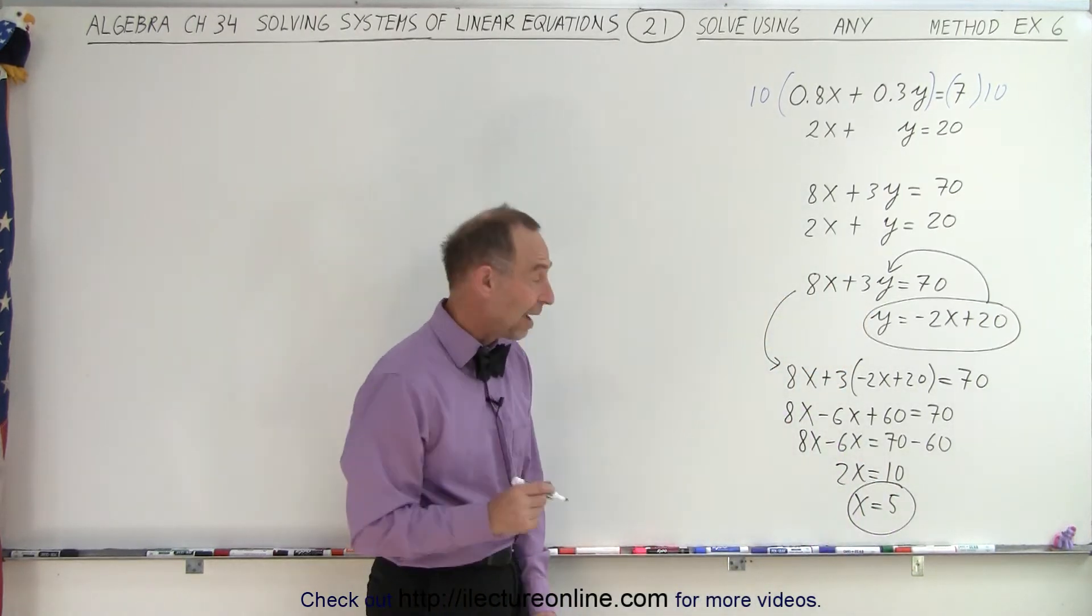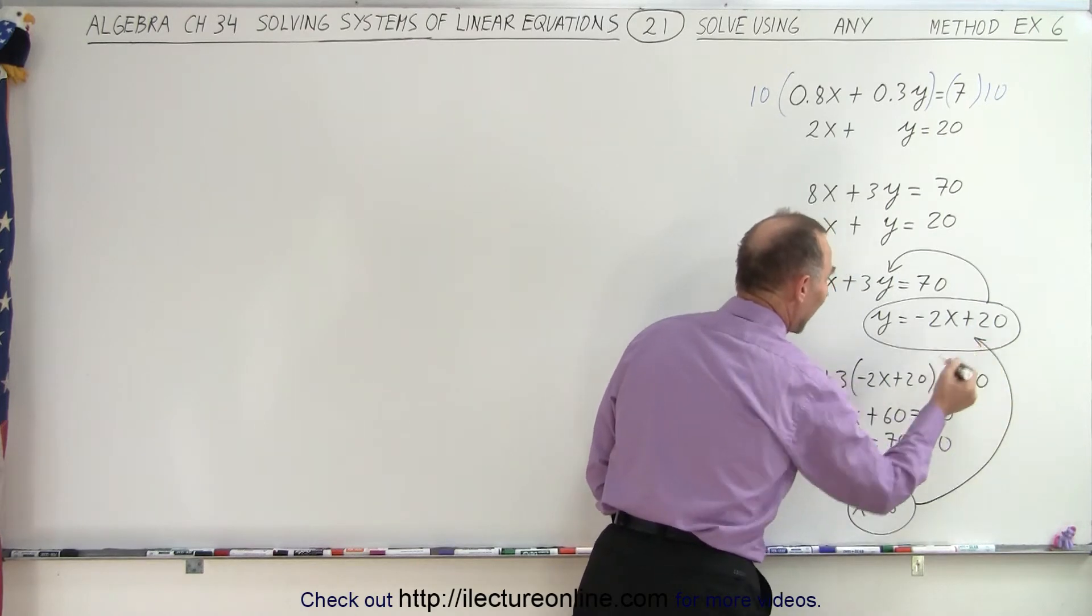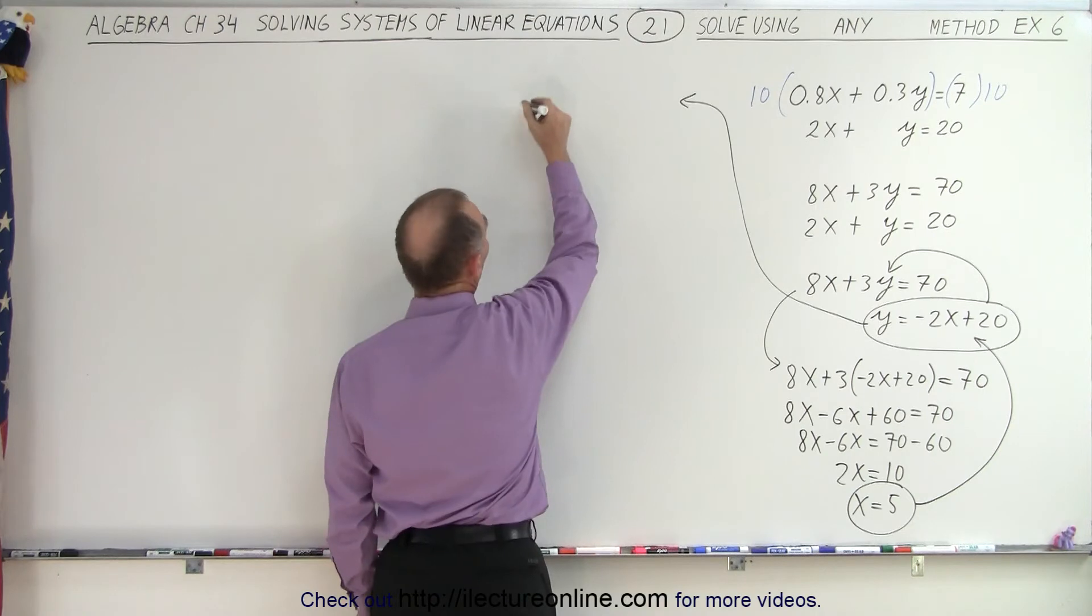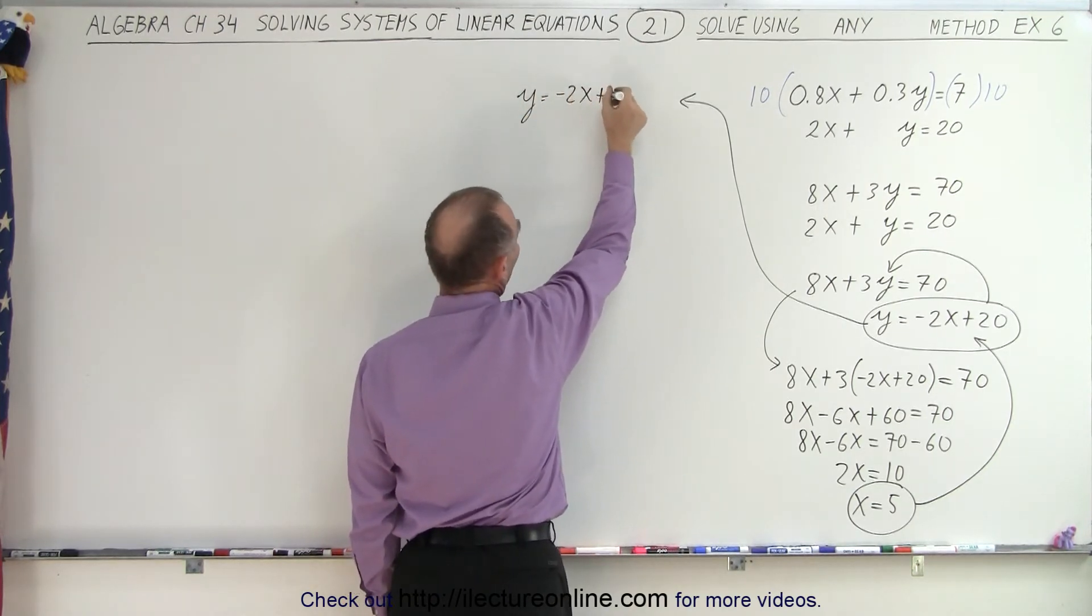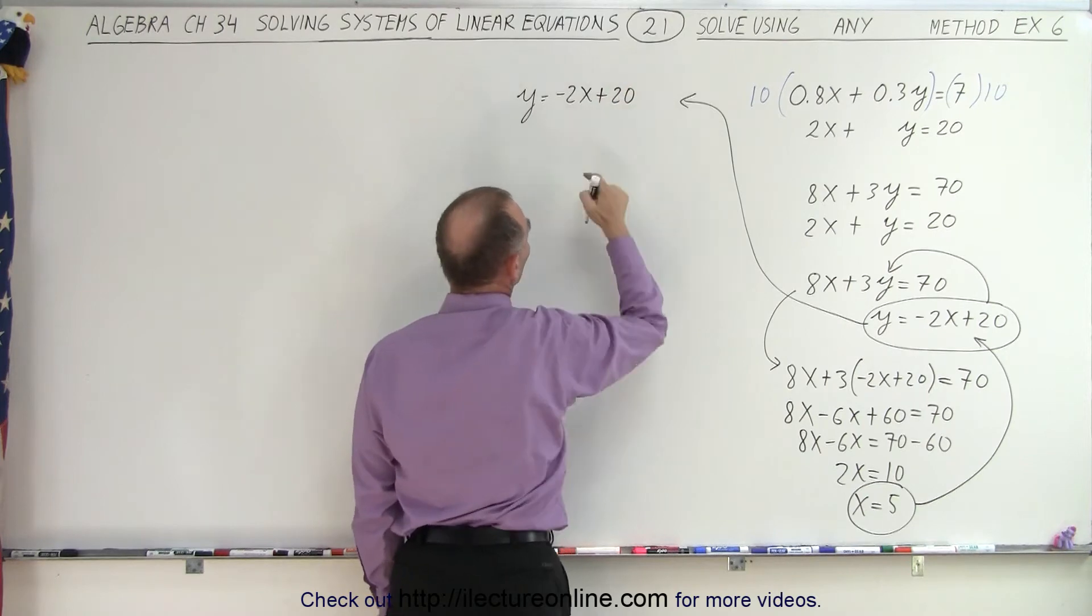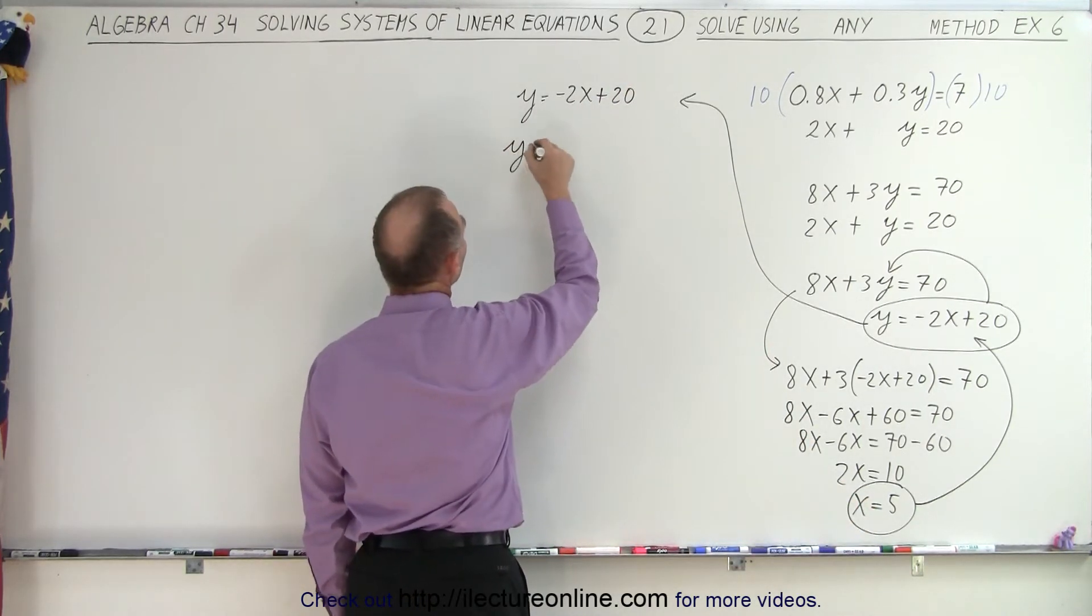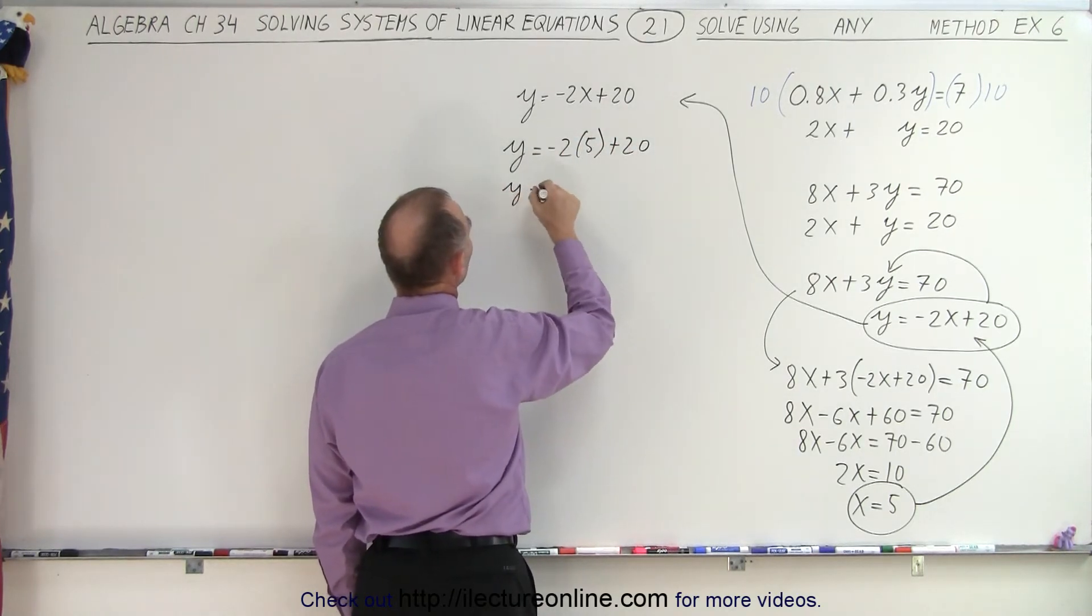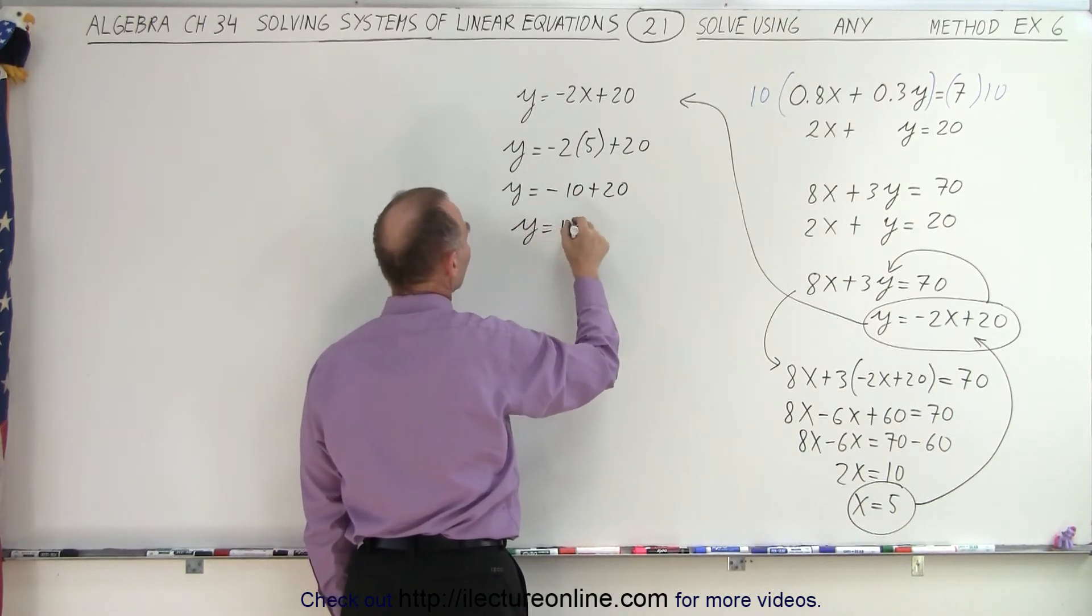So that means we now have an easy way to figure out what y is equal to by substituting it back into this equation right here. So let's do that. We get y is equal to minus 2x plus 20. And so now instead of x, we're going to write 5. So y is equal to minus 2 times 5 plus 20. We get y is equal to minus 10 plus 20. Or y is equal to 10.